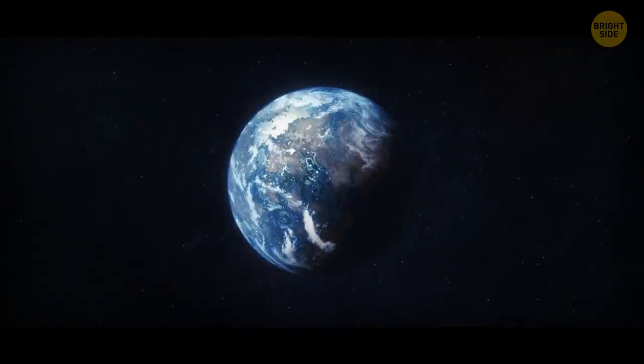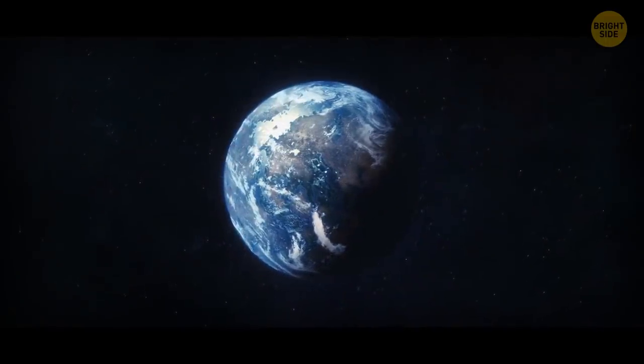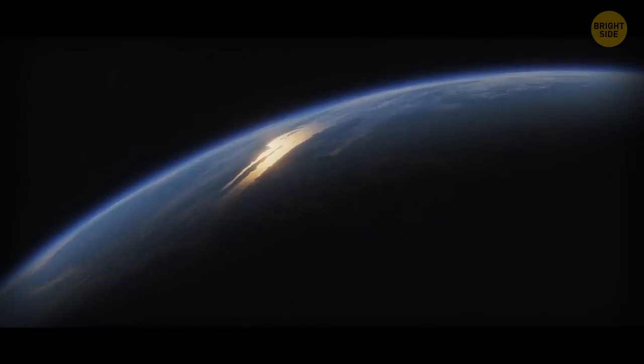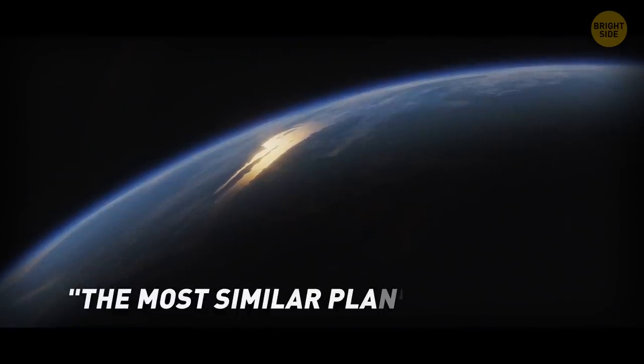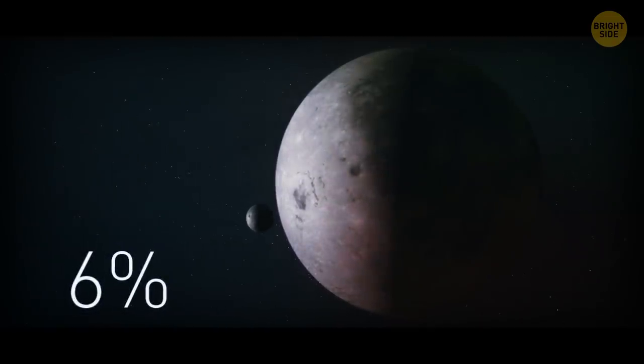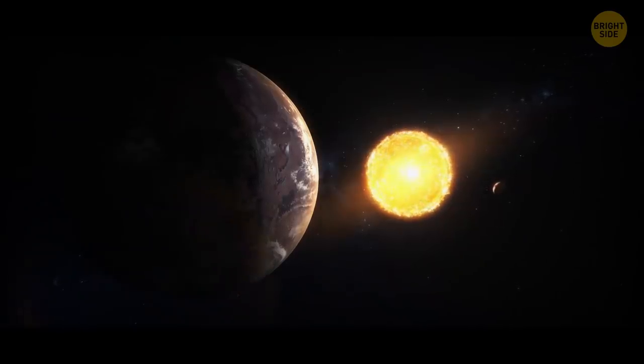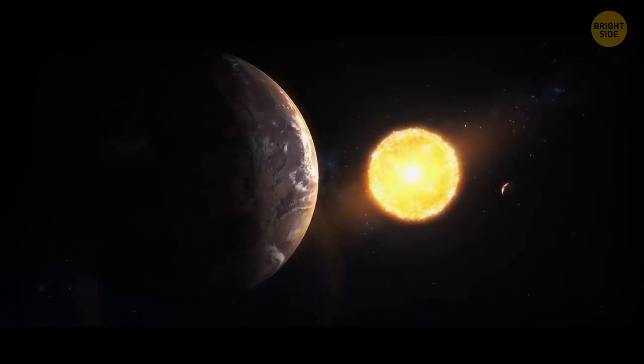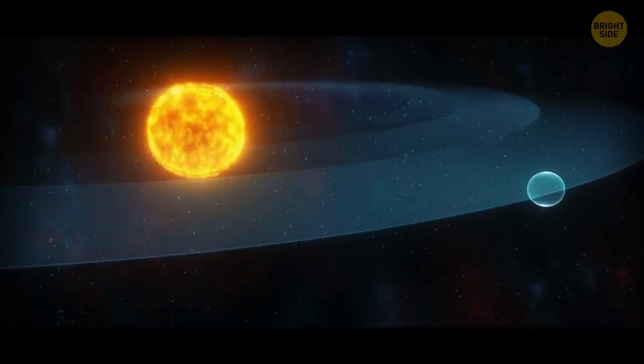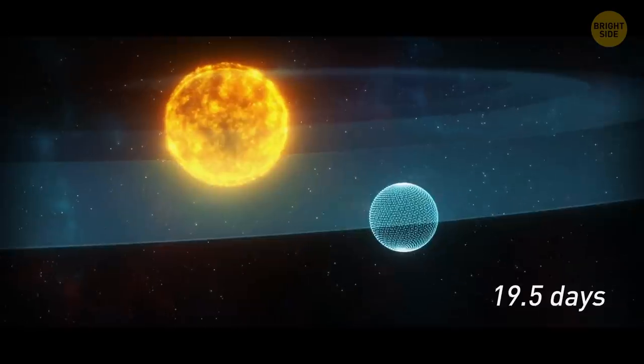And here's a suitable planet for the title of superhabitable, Kepler 1649c. In 2020, it was named the most similar planet to Earth. It's only 6% larger than our home world. It orbits a red dwarf a quarter the size of our Sun. The planet is in the habitable zone of the star and makes a complete circle around it in 19.5 days.